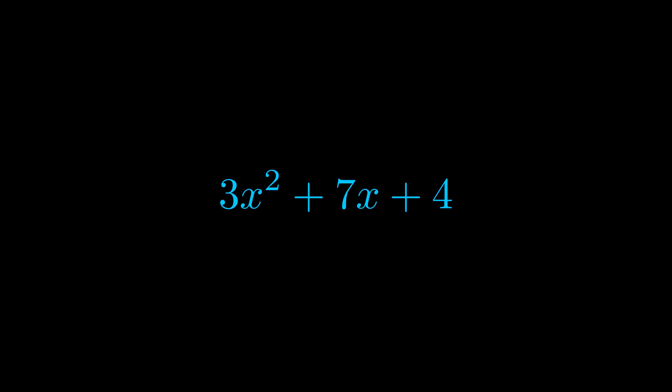Here we can see that our a value is the coefficient on the x squared term and our c value is the constant term. When we multiply these two values we get this value here in magenta.